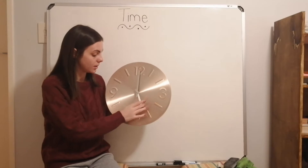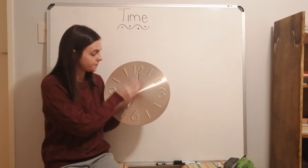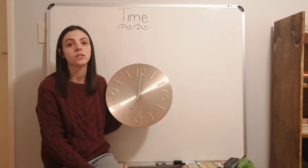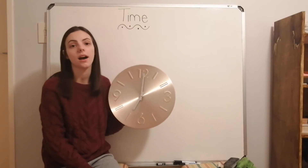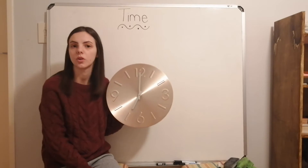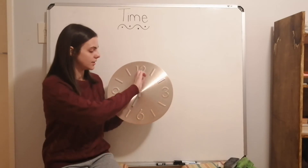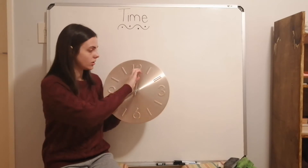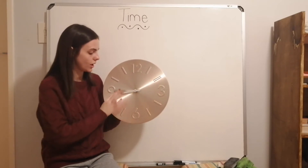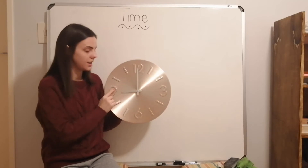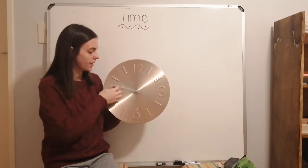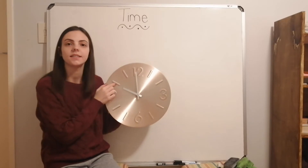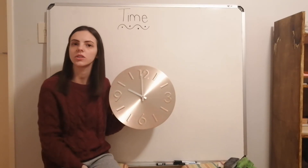You went to a concert at seven o'clock and the concert was three hours long — what time did it finish? One hour passes and it's eight o'clock. Two hours and it's nine o'clock. Three hours have passed and it's ten o'clock. So the concert finished at ten o'clock — easy!